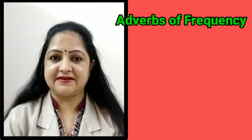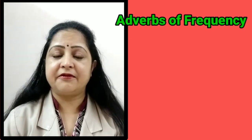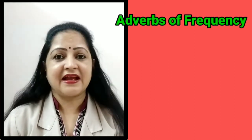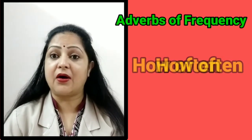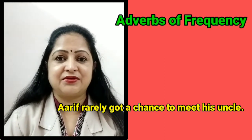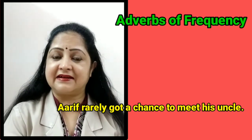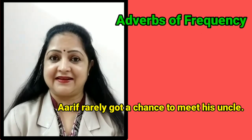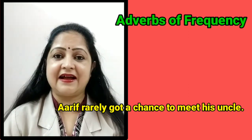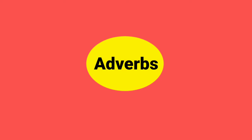The fifth type of adverb is adverbs of frequency. Adverbs of frequency tell us about the repetition of any action. They give us the answer to the question 'how often.' For example: Arif rarely got a chance to meet his uncle. So here, how often did Arif meet his uncle? The answer is 'rarely.' So 'rarely' is the adverb of frequency.